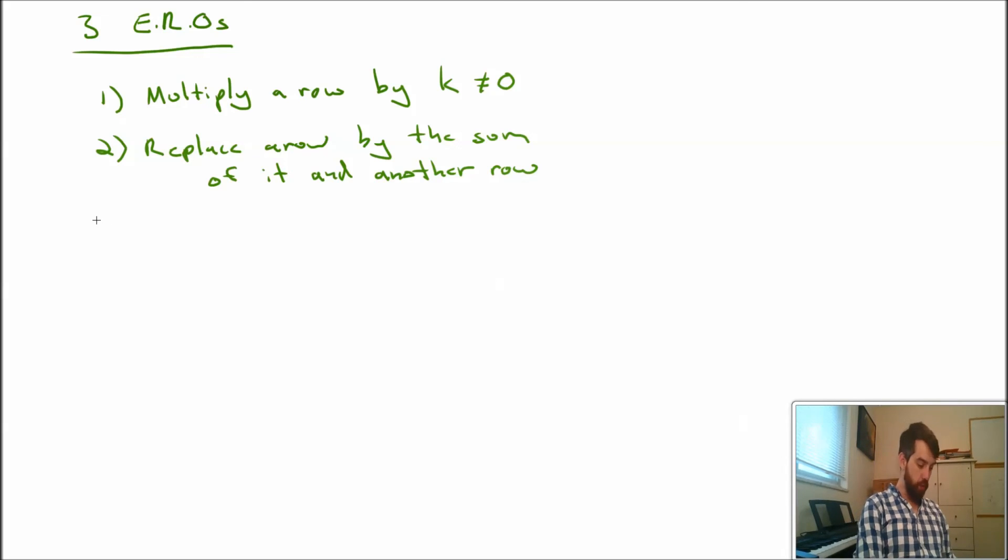The third one we didn't use, but it's perfectly fine. I could interchange two different rows. It doesn't matter the order I put them in, so I can interchange them. Interchange two different rows. And this is going to be it.